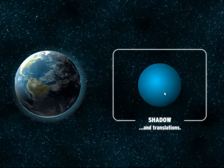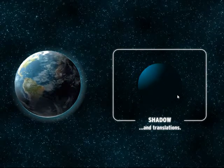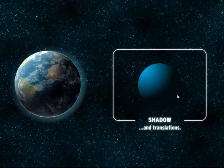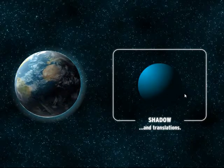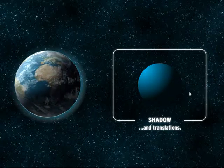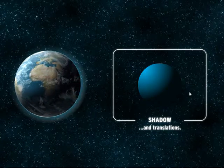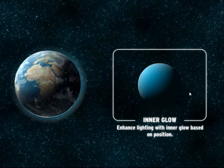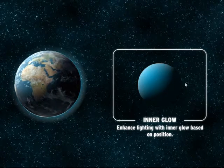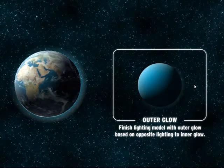Using translation, we can move the focal point and effectively fake lighting from any point in 3D space without the performance cost of full lighting. The next thing we do is add an inner glow, which makes the lighting pop a little bit more.